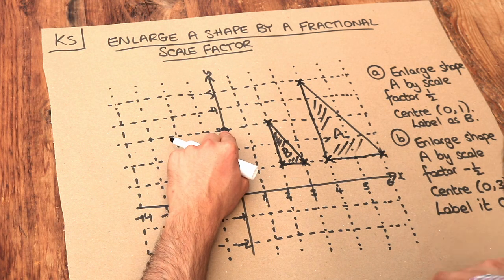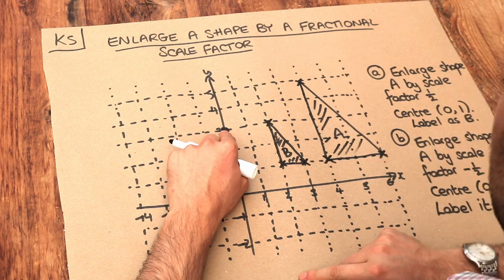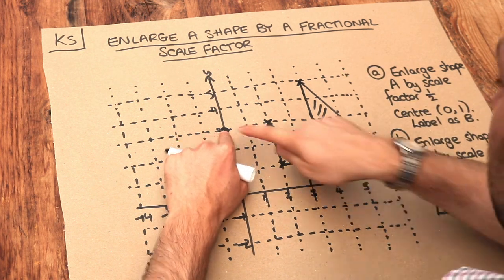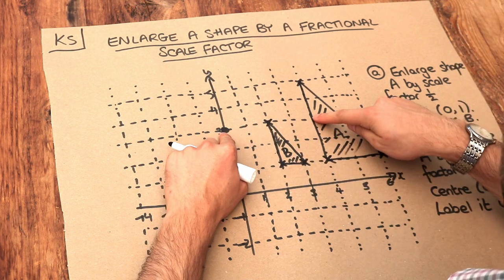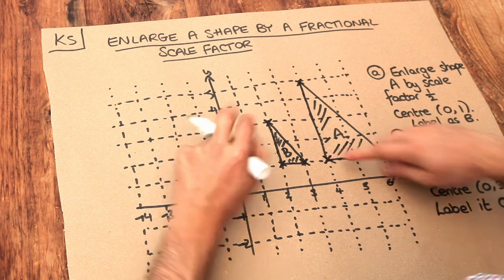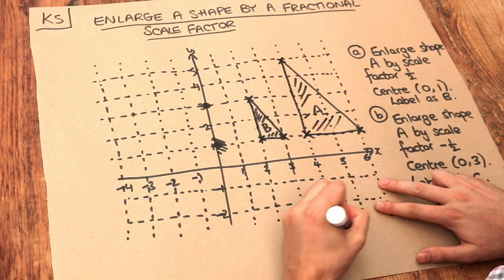We count from the centre of enlargement to each point on the shape. Starting with this bottom left point, from the centre of enlargement: 1, 2, 3, 4 right and 2 down. So that's 4 right and 2 down.